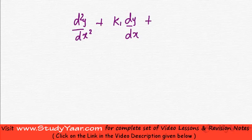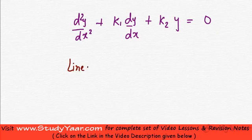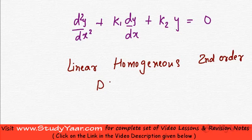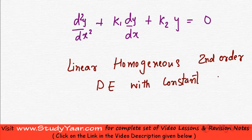Let us suppose I have a DE which is like this: d²y/dx² plus k1 dy/dx plus k2 y equals 0. Let's suppose I have this as a second order differential equation. This is essentially known as a linear, homogeneous, second order DE with constant coefficients.